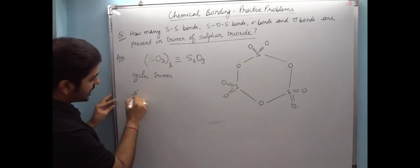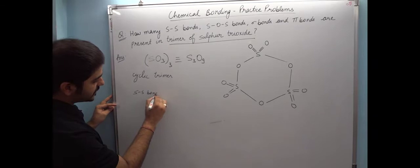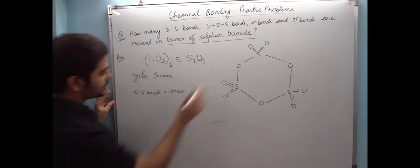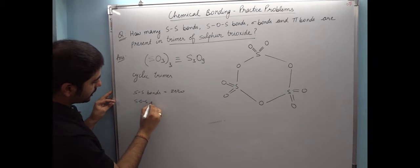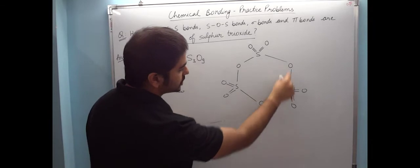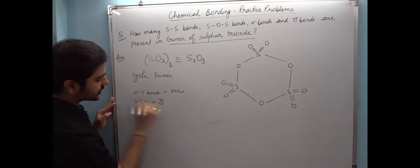So now, where we have an oxygen, SS bonds, how many? Zero. Then SOS bonds, SOS bonds, SOS1, SOS2, SOS3. This answer is three.